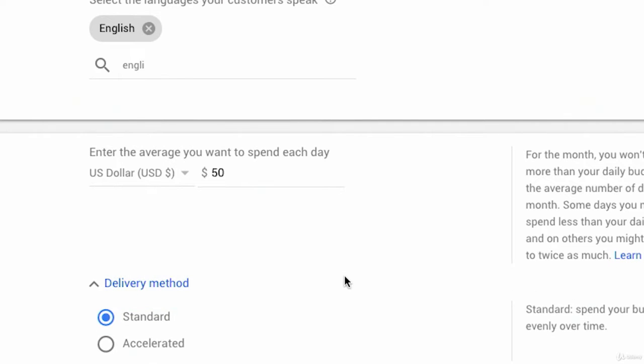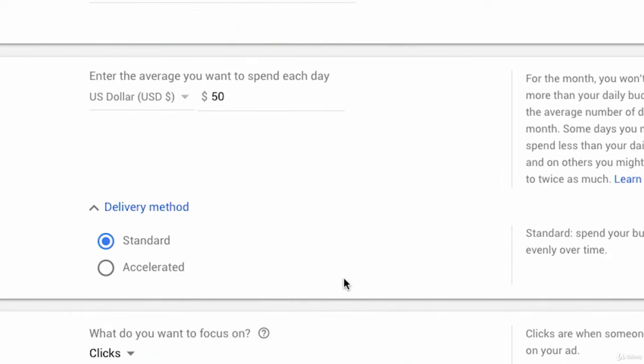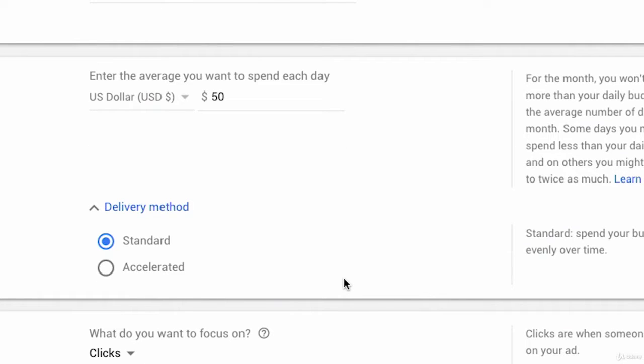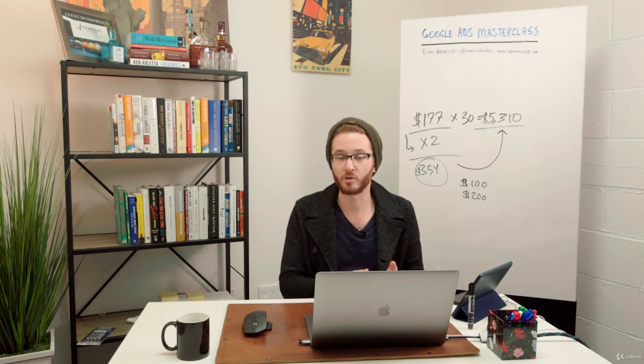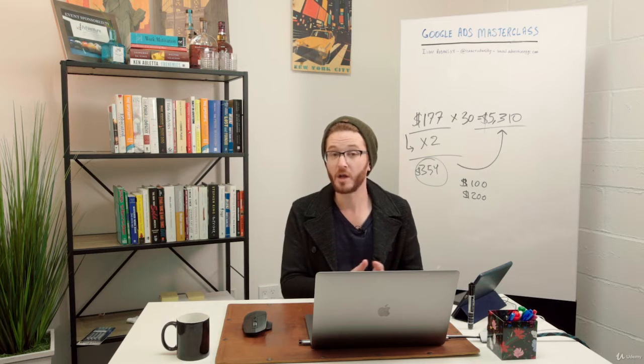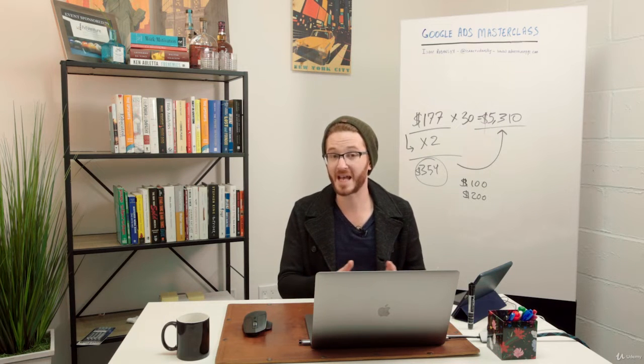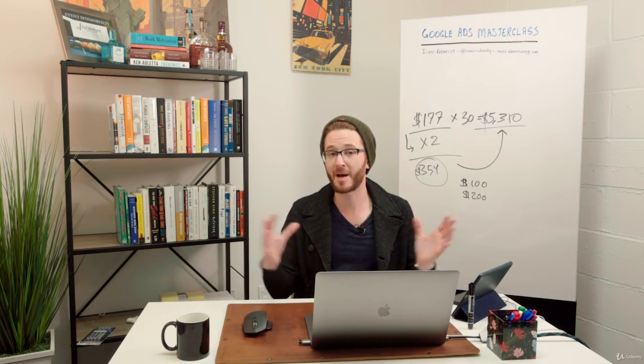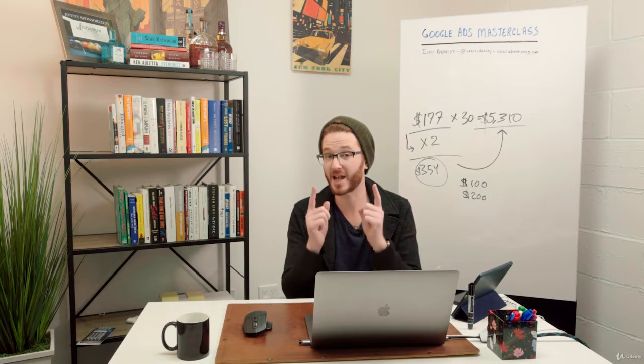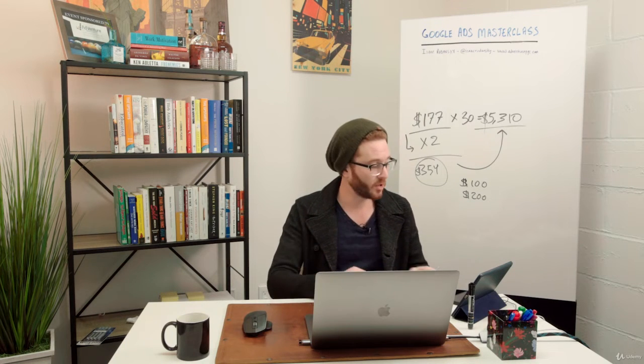And now I'm going to delivery method. If I twirl down delivery method, which is an advanced setting, we have two options: standard delivery method and accelerated delivery method. I want to jump into a slide to explain exactly how this works. How do you want us to deliver those impressions to you? Do you want them all at once, as fast as possible, or throughout the day or throughout the maximum amount of time you have given your ad scheduling options?